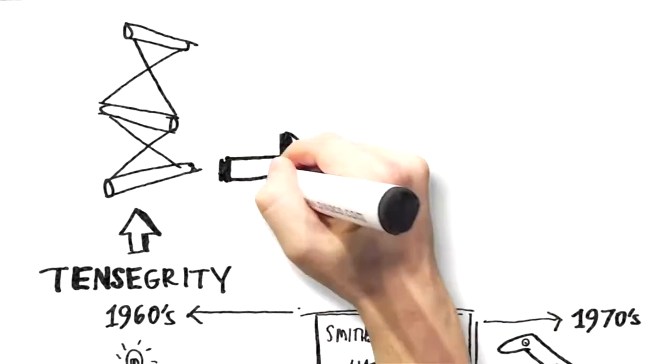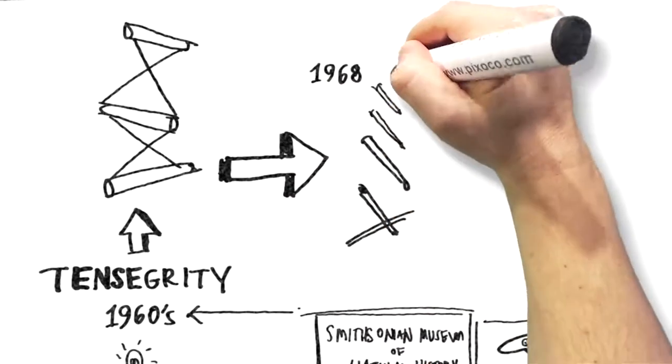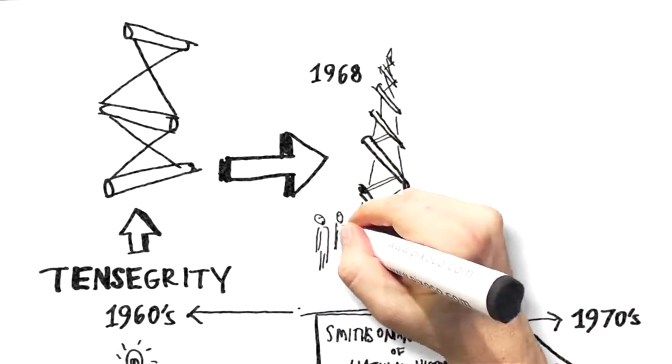Just like the Needle Tower in Seattle, built in 1968. Six floors straight up, consisting of almost nothing but air.